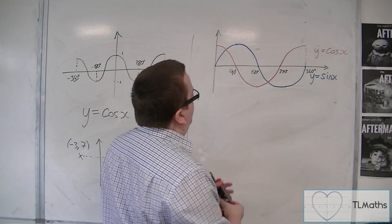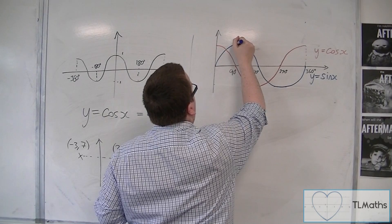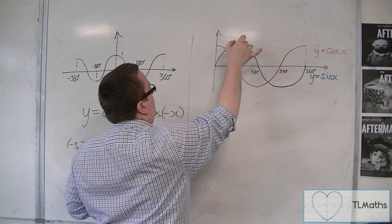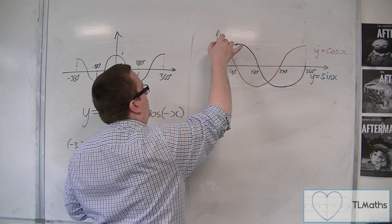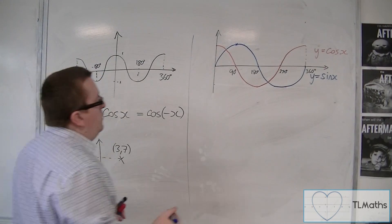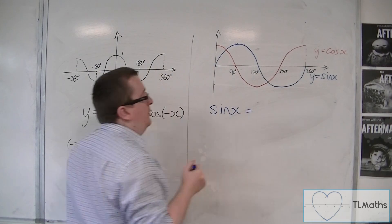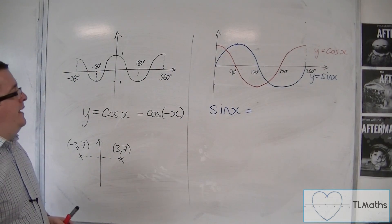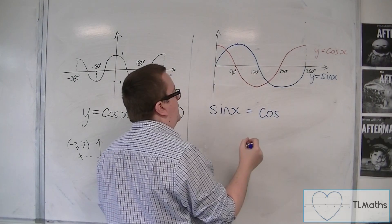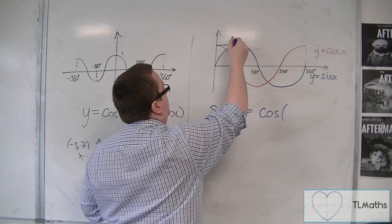So, if you're looking at y equals sine x. If we take this point. Then this point corresponds with that point there. So, if I wanted to write sine x in terms of cosine of x, to get from cosine of x to sine x, I need to translate it.